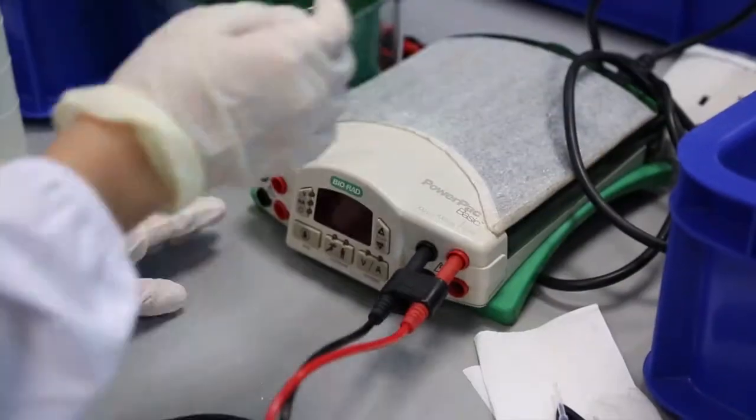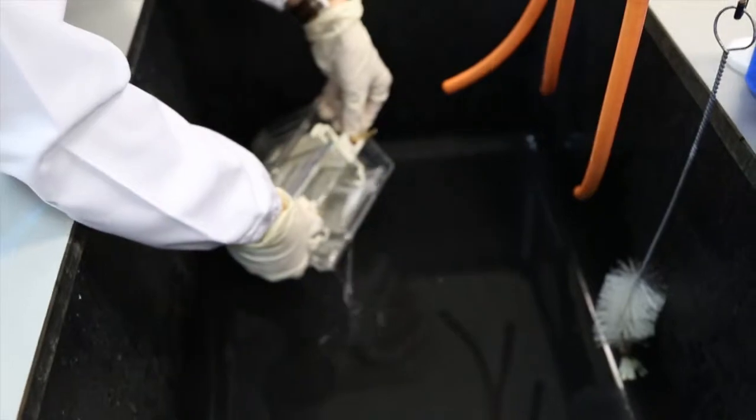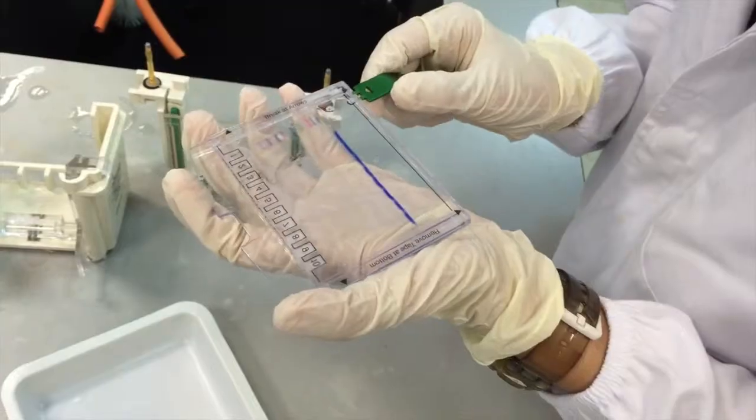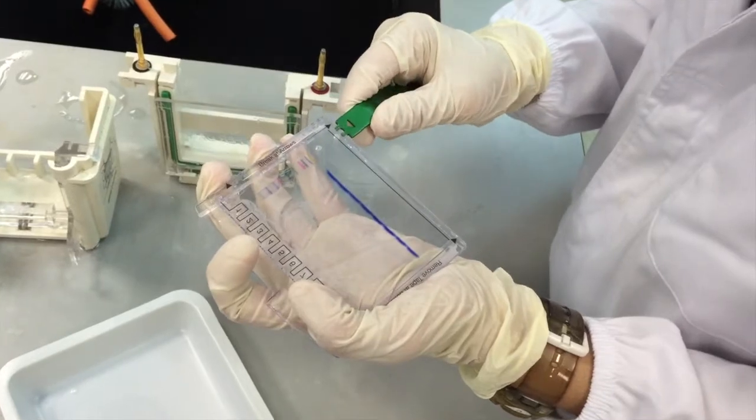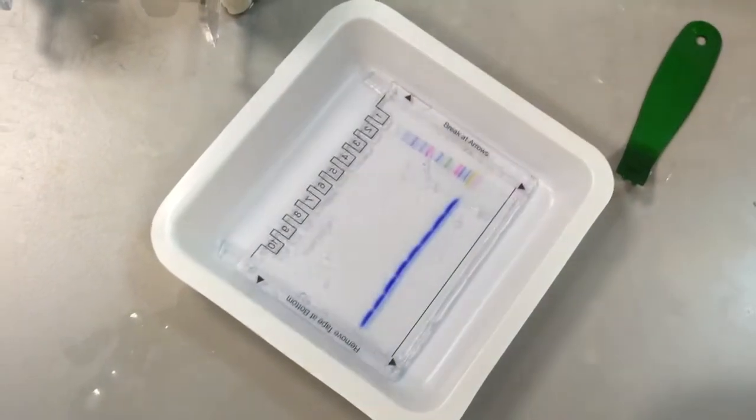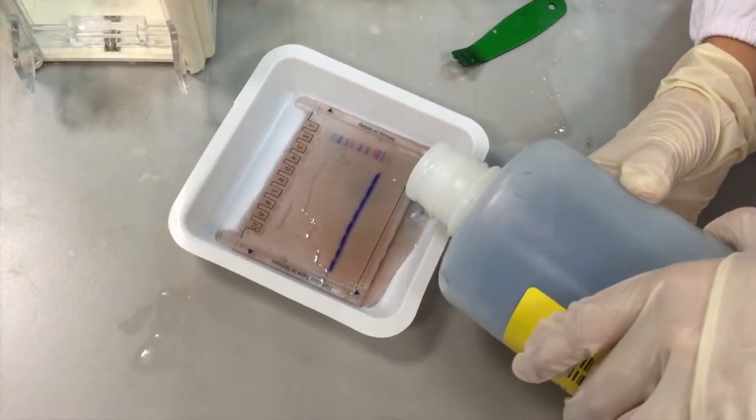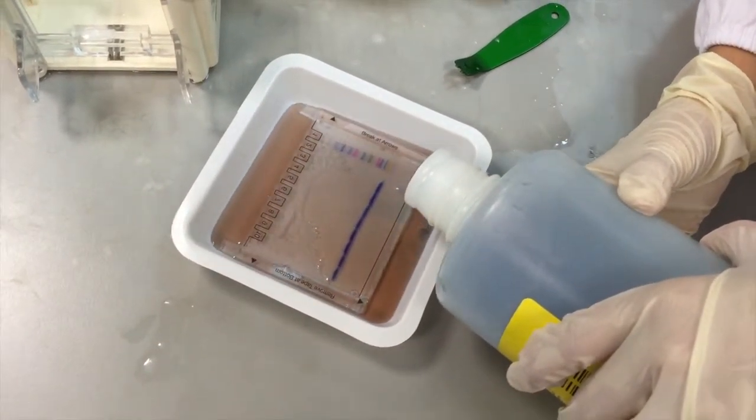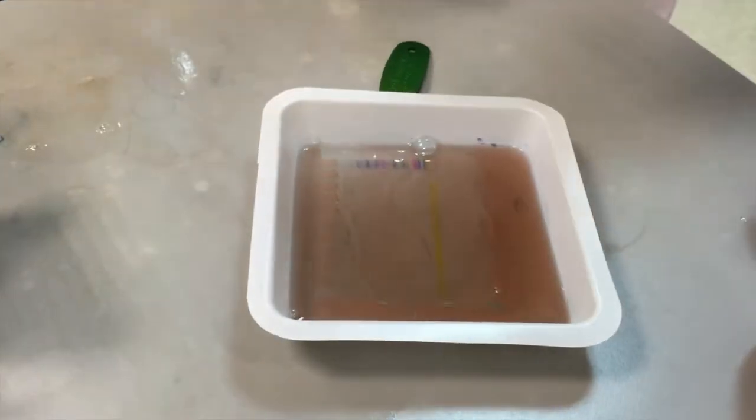After the analysis, turn off the power supply and disconnect the electrical leads. Discard the buffers and remove the gels from the gel cassette sandwich by separating them gently. Transfer the gel onto a staining plate and pour Bio-Safe Coomassie stain into the plate. Stain overnight to see the colored bands of the sample.